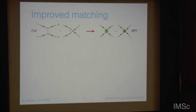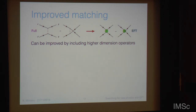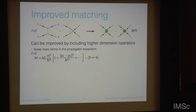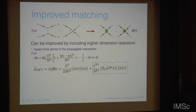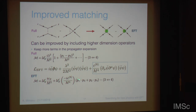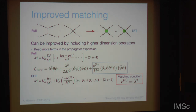How can we improve this description? On one hand, you can include higher-dimensional operators, which in this example amounts to keeping more terms in the expansion of the propagator. Taking the sub-leading term in the full theory, I need to add a dimension-eight operator involving four fermion fields and two extra derivatives, suppressed by the fourth power of the mass. Doing the same matching exercise, one gets another matching condition where C_8 is also equal to lambda squared. So we can systematically improve the EFT by including higher-order operators.